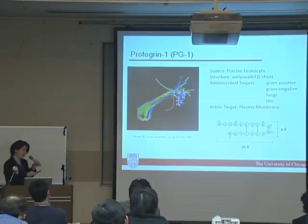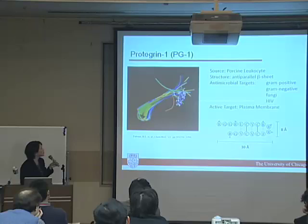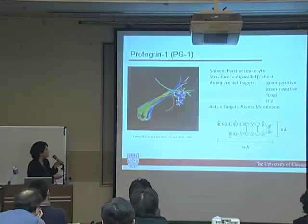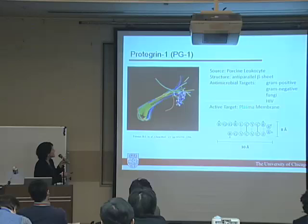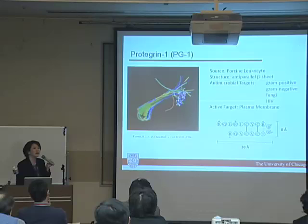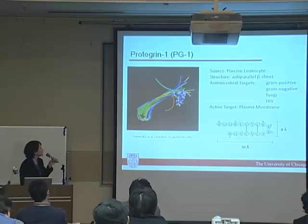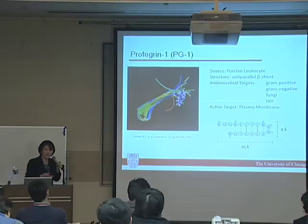The particular peptide I'll focus on is protegrin-1, which is derived from pig leukocytes. In this picture, you see that this is a very short peptide where we have 18 amino acids in sequence, but it's very stable in structure because of two intramolecular disulfide bonds. And it has a wide variety of targets, including gram-positive, gram-negative bacteria, fungi, and even HIV virus. There's a lot of attention paid to this and all antimicrobial peptides, and it is thought that the active targeting location is actually the membrane itself.